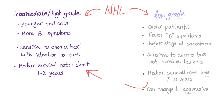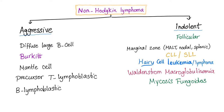Here are the specific subtypes. Aggressive subtypes include diffuse large B-cell lymphoma, Burkitt's lymphoma, mantle cell lymphoma, and precursor T-lymphoblastic and B-lymphoblastic lymphoma. The indolent subtypes include follicular lymphoma, marginal zone lymphoma, CLL/SLL, hairy cell leukemia/lymphoma, Waldenström macroglobulinemia, and mycosis fungoides.